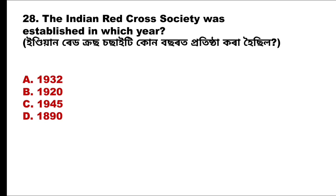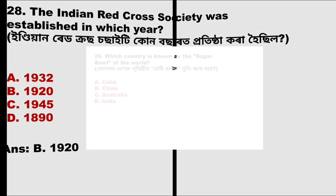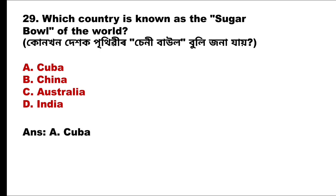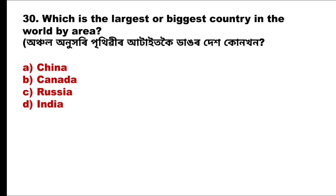Question 28: The Indian Red Cross Society was established in which year? The answer is option B, 1920. Question 29: Which country is known as the sugar bowl of the world? The answer is option A, Cuba.